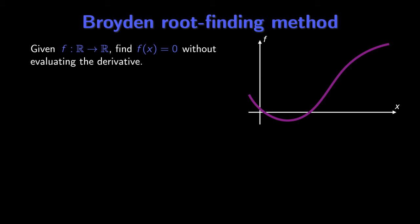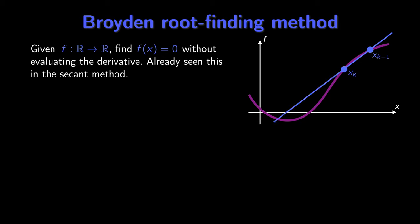Broyden's method is a way to find roots of systems of nonlinear equations without evaluating the Jacobian. To illustrate this method, let's first look in one dimension — a scalar function f — and find roots f(x) = 0 without evaluating the derivative. We've already seen how to do this: we can use the secant method. If we have a solution x_k and a previous solution x_{k-1}, we draw a straight line through these two points and use that line to approximate the derivative of f at x_k. So our approximate derivative equals (f(x_k) − f(x_{k-1})) / (x_k − x_{k-1}).